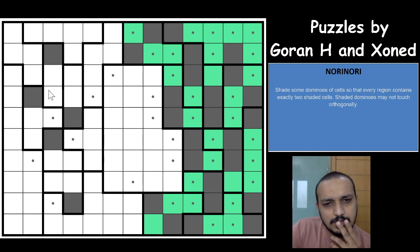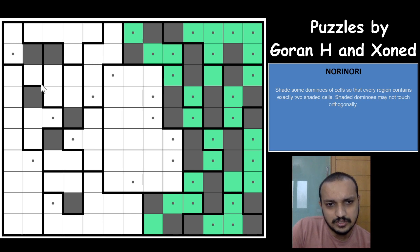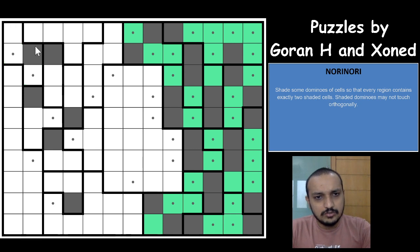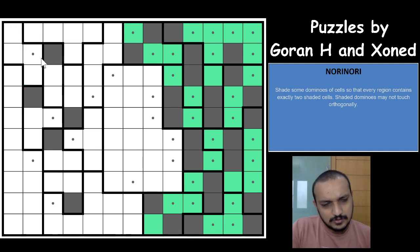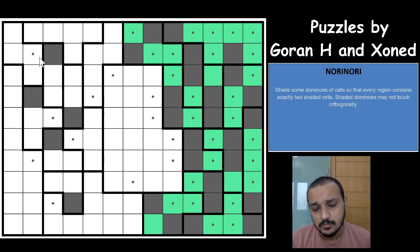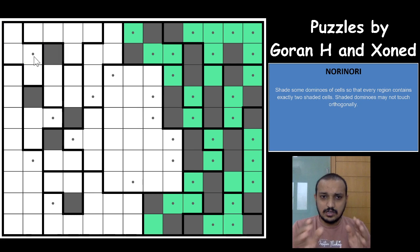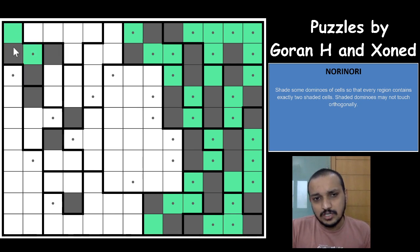This seems to be a difficult one — nothing much concrete here yet. If this cell is shaded, you don't have enough cells to shade in this region: this becomes unshaded, this becomes unshaded, this also has to be unshaded because you can't form a domino there. So the second cell for this shaded cell cannot be that one. Both of these cells cannot be shaded at a stretch because there is no way to form a domino with this cell, so this cell would have to be shaded.